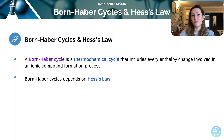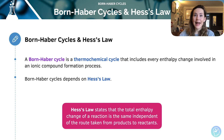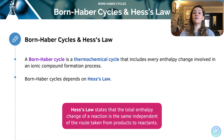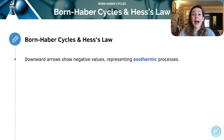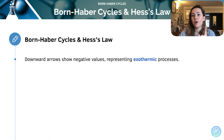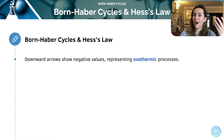Born-Haber Cycles depend on Hess's Law. As a reminder, Hess's Law states that the total enthalpy change of a reaction is the same, independent of the route taken. If you have the values for all of the stages of a Born-Haber Cycle but you're missing one value, you can use all of the known values to calculate the unknown value — that is the principle of Hess's Law.